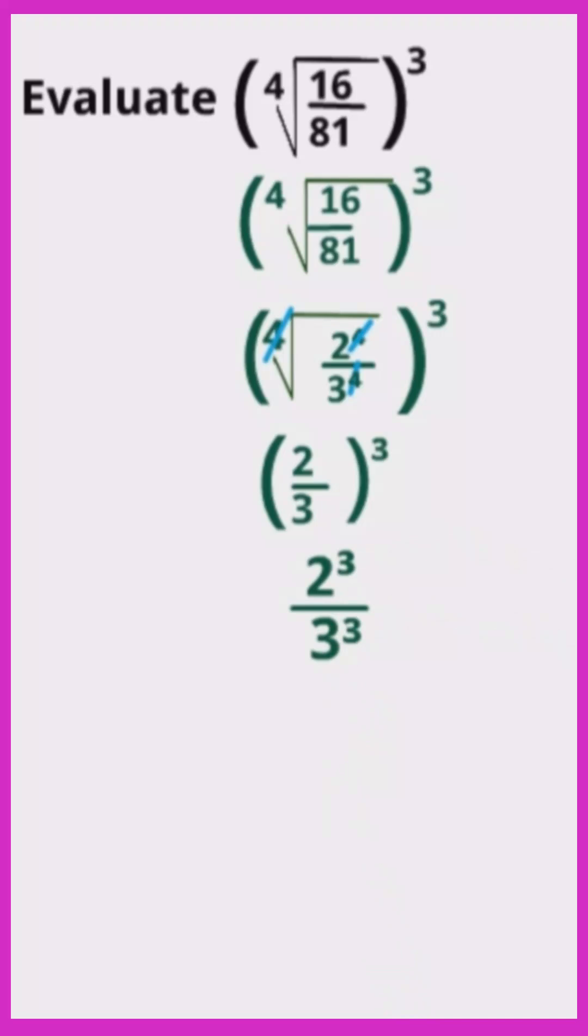Thereafter, we multiply 2 times 2 times 2 is equal to 8. Next, we multiply 3 times 3 times 3 is equal to 27. So our final answer is 8 over 27. You've just mastered another concept with Easy Learning Z Mathematics.